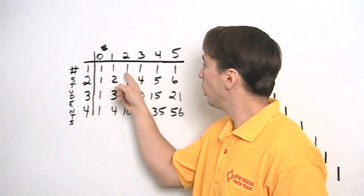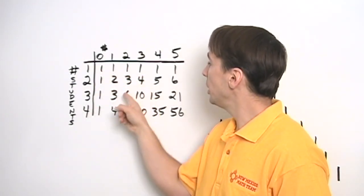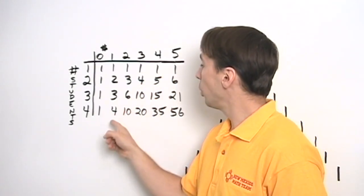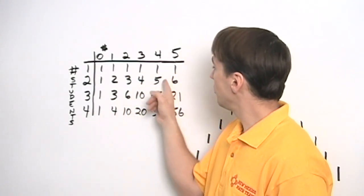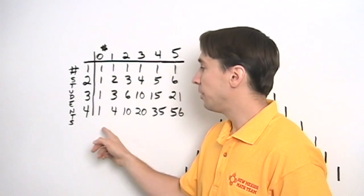1, 1, 1, 1, 1, 2, 1, 1, 3, 3, 1, 1, 4, 6, 4, and there'll be a 1 there, 1, 5, 10, 10, there'll be a 5 and then a 1.